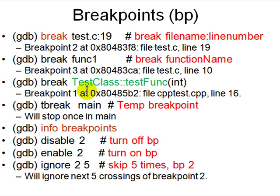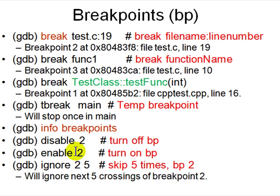The most important thing you'll do is set a breakpoint where you want to stop. You say break followed by filename:line_number, or a function name, or classname::function with a type (since functions can be overloaded in C++). Use tbreak for a temporary breakpoint that stops only once. You can list breakpoints with info breakpoints, enable or disable them, and use ignore breakpoint 2 five times to skip it and stop on the fifth hit.